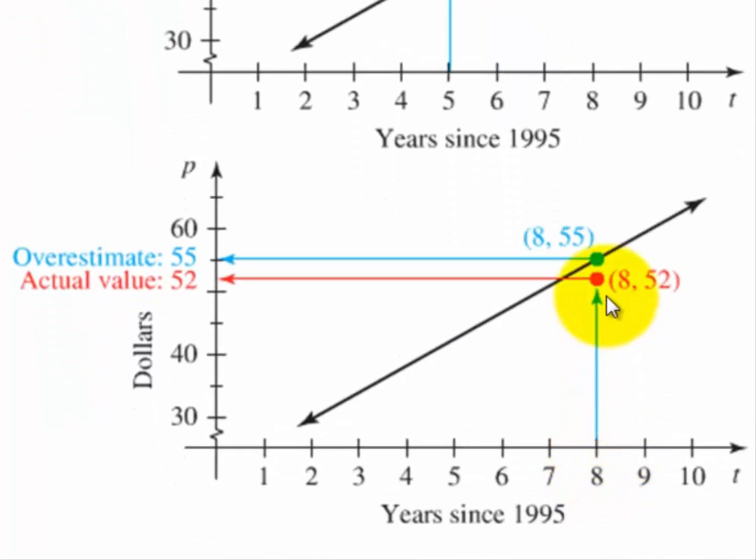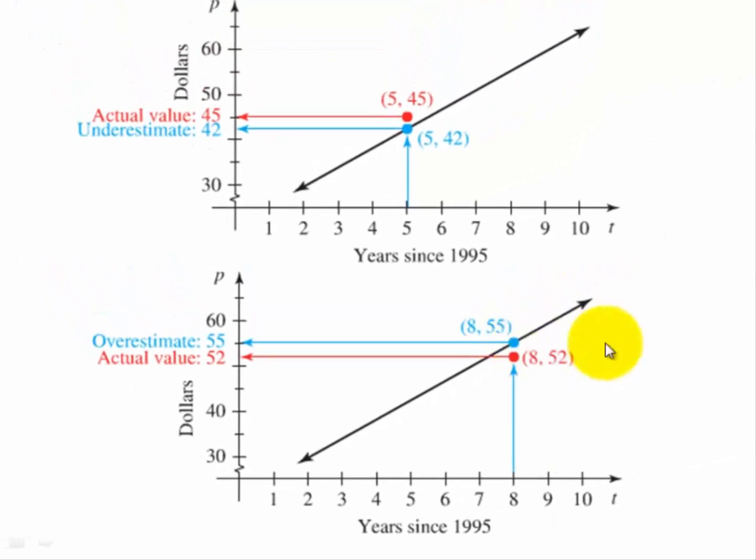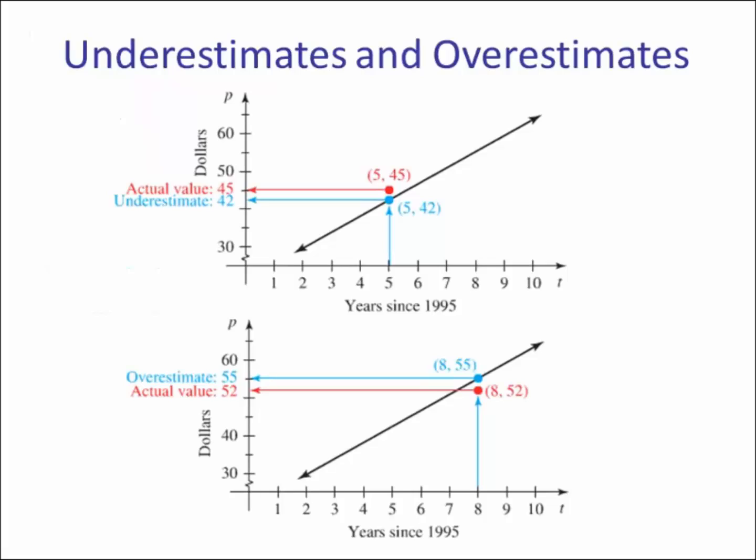When t equals 8, the model predicted p to be 55, but the actual value was $52. So since the line is above the actual data point, this is an overestimate. So if the line is above the actual data point, it's an overestimate. If the line is below an actual data point, it's an underestimate.